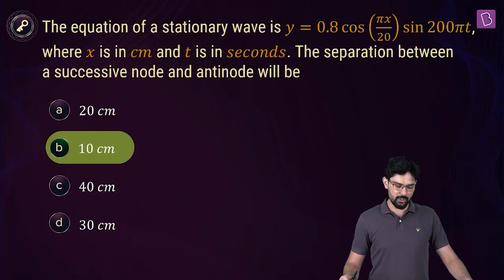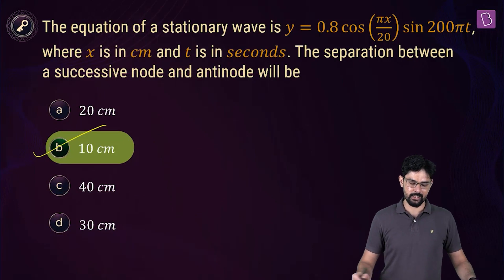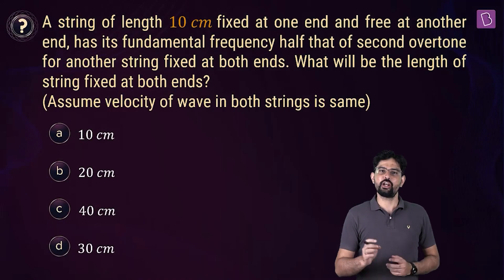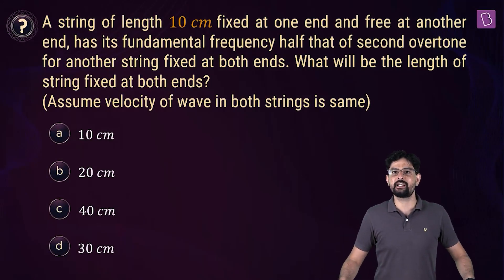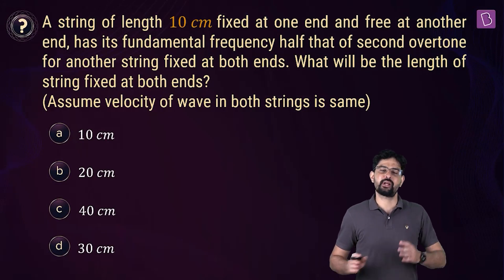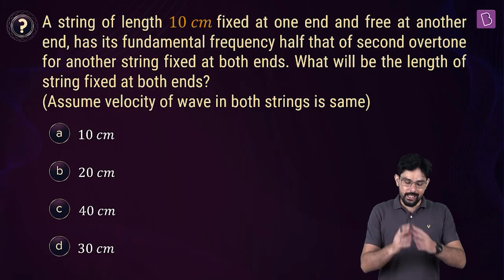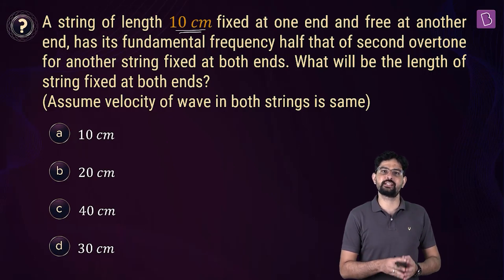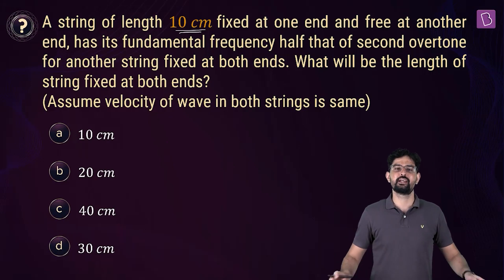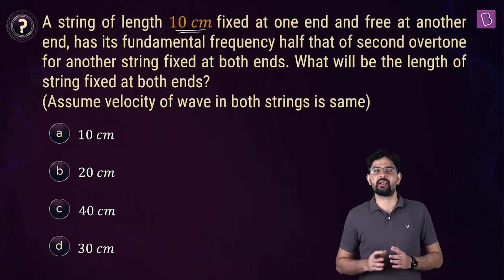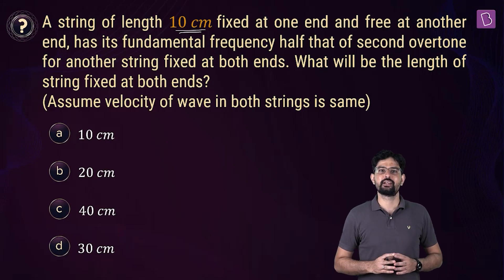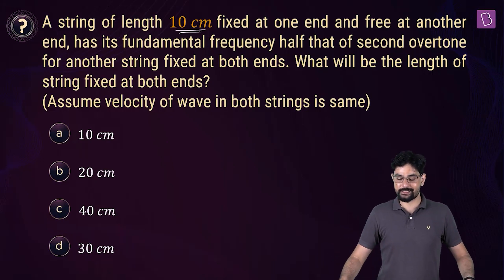The separation is 10 cm and option B is the right option. According to the next problem, there are two strings vibrating. The first string has a length of 10 cm with one end fixed and the other end free, vibrating in its fundamental mode. There is another string fixed at both ends, vibrating in its second overtone.